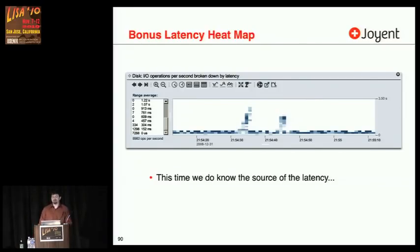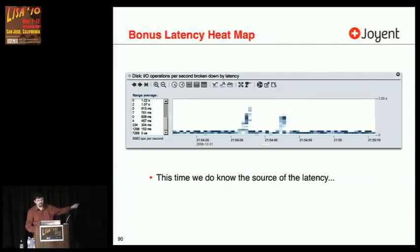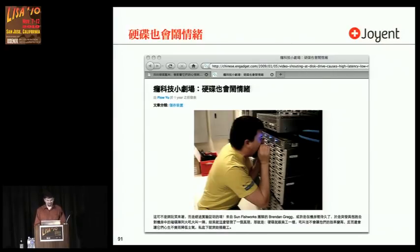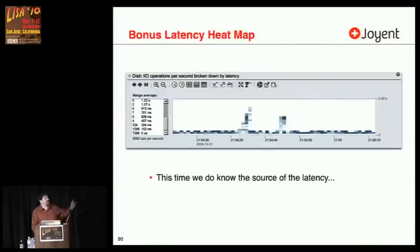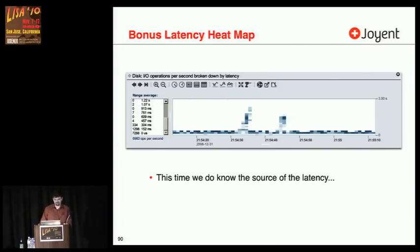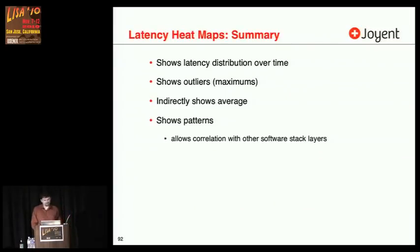Here is a latency heat map with a couple of spikes of latency that go really high — disk IO latency getting into two seconds. This time we do know the source of latency: that was the heat map when I was screaming at the disks. I am the source of that latency. How many people have seen that video? That's actually the heat map — that's why I was doing it, because you could visualize it and you can see the latency as I'm shouting at the disks. That was another type of performance experiment. There's a video on YouTube where I actually go through the full story of why I screamed at the disks.